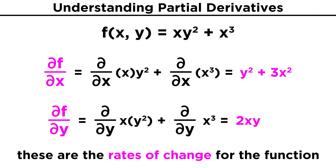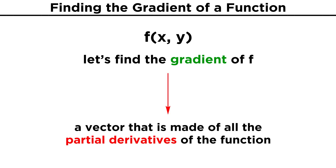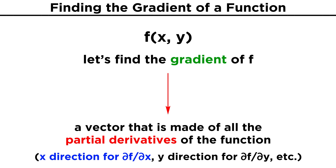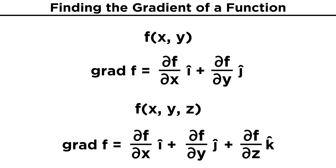We will now introduce a concept that combines these partial derivatives, and that is called the gradient. The gradient of a function is simply a vector made up of all its partial derivatives in their associated positions. This means the x direction for df dx, the y direction for df dy, and so on. We can write this out as grad f equals df dx times i plus df dy times j. If in three dimensions, that would be grad f equals df dx i plus df dy j plus df dz k. The components of this gradient vector are the partial derivatives of the function f, which we can produce in the manner we just discussed.